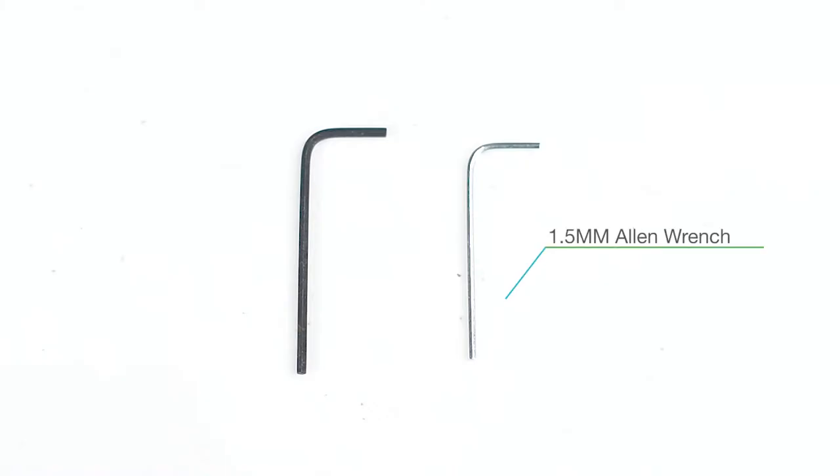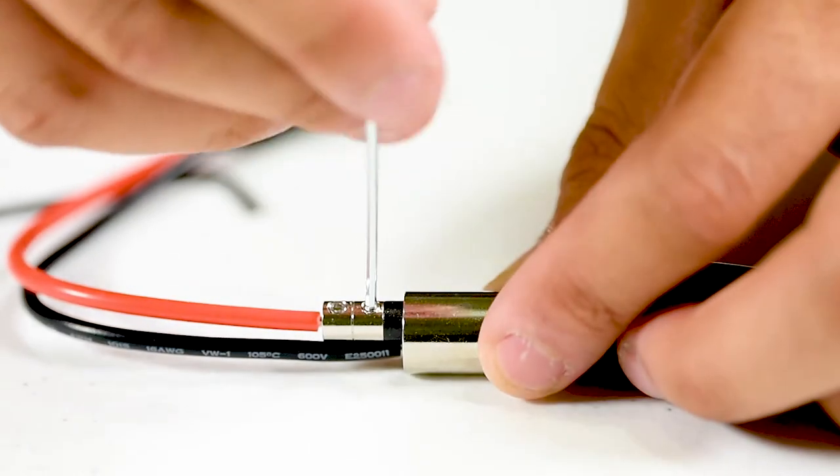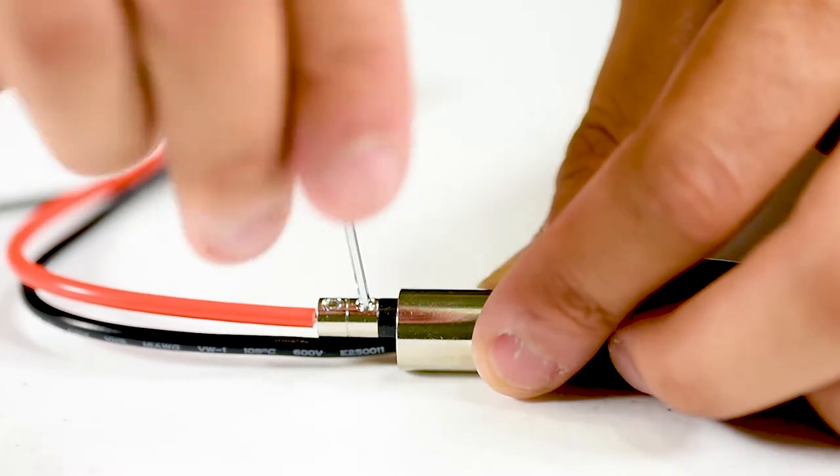Use the provided 1.5 millimeter Allen wrench to replace and securely tighten the M3 set screw.